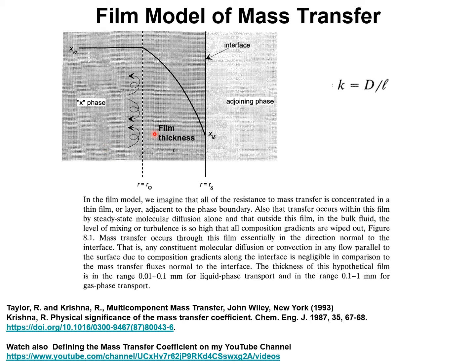Mass transfer in this film of thickness L occurs normal to the interface. That is, any constituent molecular diffusion or convection in any flow parallel to the surface due to composition gradients along the surface is negligible in comparison to the mass transfer fluxes normal to the interface.